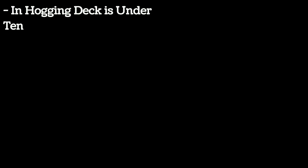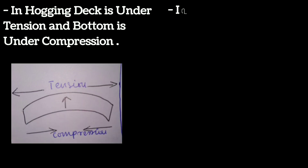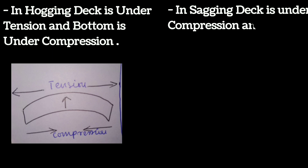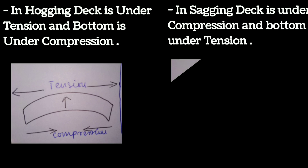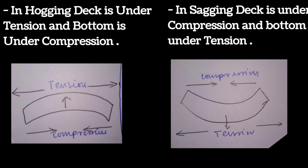In a hogging condition, the deck is under tension whereas the bottom is under compression, as you can see in this picture. Whereas in a sagging condition, the deck is under compression and the bottom is under tension, as you can see in this picture. That's all for this topic — hope you liked it, thank you.